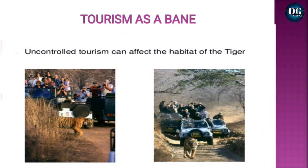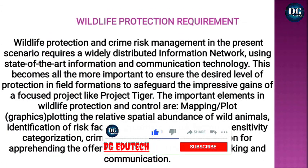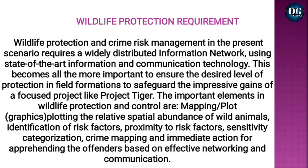Uncontrolled tourism can affect the habitat of tigers, as seen from the figures. Wildlife protection and crime risk management in the present scenario requires a widely distributed information network using state-of-the-art information and communication technology. This is important to ensure a desired level of protection in field formations to safeguard the gains of projects like Project Tiger. Important elements include mapping and plotting relevant spatial abundance of wildlife, identification of risk factors, proximity to risk factors, sensitivity categorization, crime mapping, and immediate action for apprehending offenders.